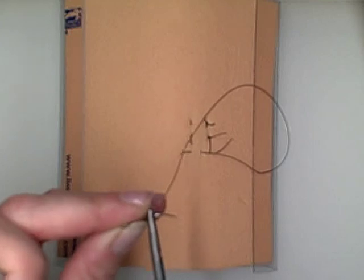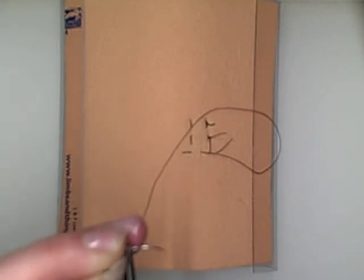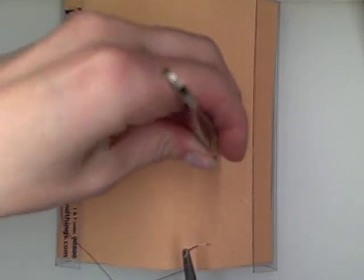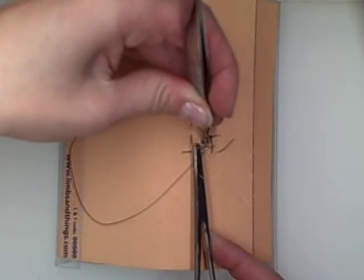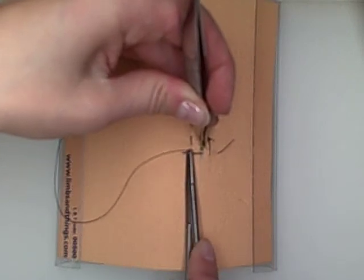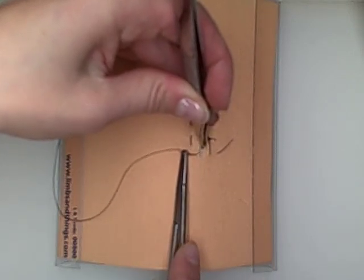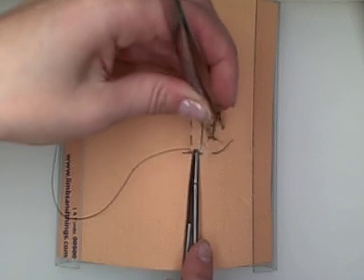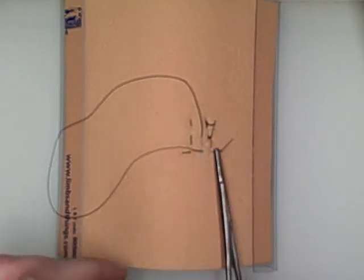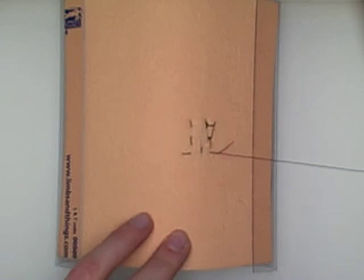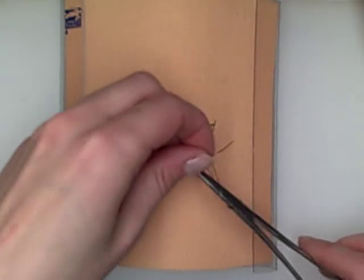And again, we're going to reload the needle backwards and we're going to take a nice shallow bite. Okay, so now I'm going to do an instrument tie.